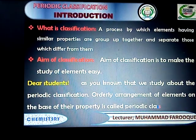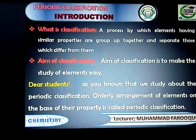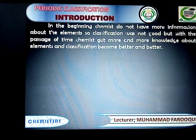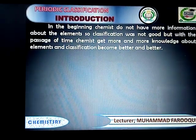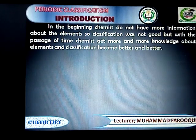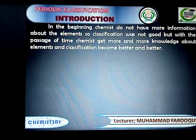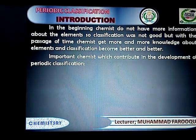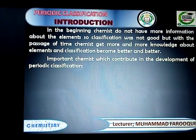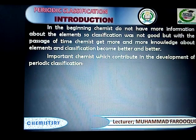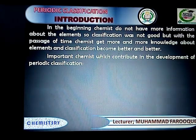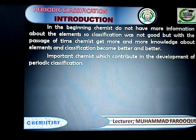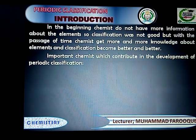As you know, today we are discussing about periodic classification. Periodic classification is an orderly arrangement of elements on the basis of their properties. In the beginning, scientists did not have too much information about the elements, so classification was not very good. But with the passage of time, chemists gained more and more information about the elements, and classification became better and better.